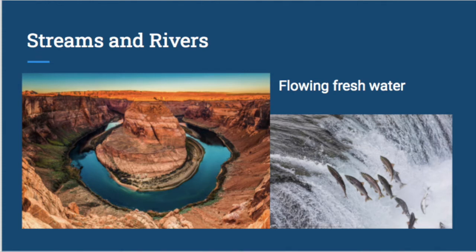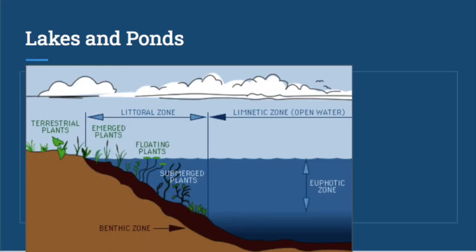The second type of freshwater ecosystem is lakes and ponds. These are bodies of water that stand still — unlike streams and rivers, they are not flowing. Ponds are divided into regions based on depth and the amount of sunlight present. Because of differences in light, nutrients, and temperature, each part of a lake or pond is going to have different organisms that call it home.